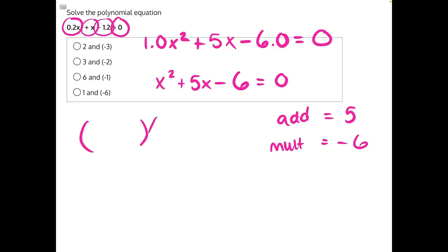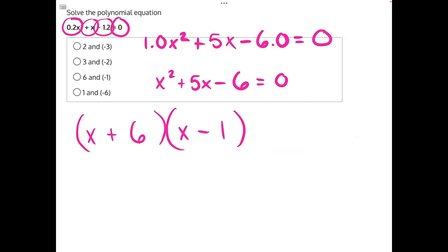So now we can factor this polynomial: (x + 6)(x - 1), and both of these binomials are equal to 0. So now we can separate each of these binomials. We have x + 6 is equal to 0 and then we have x - 1 is equal to 0, and we need to solve both of these equations.